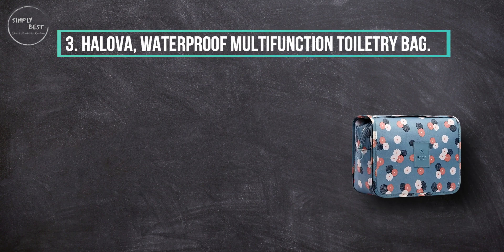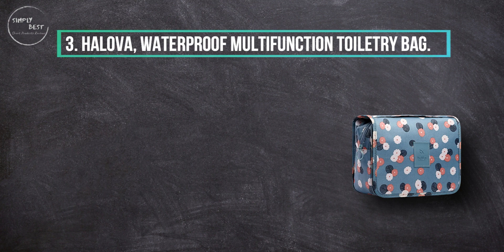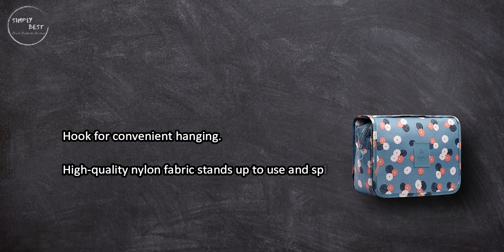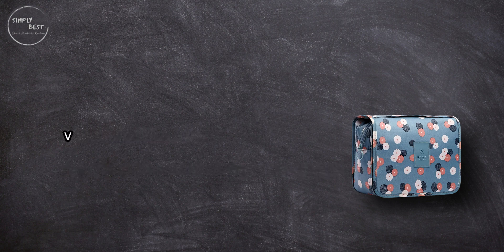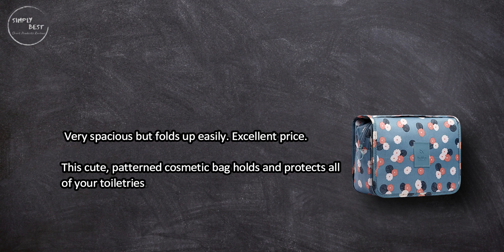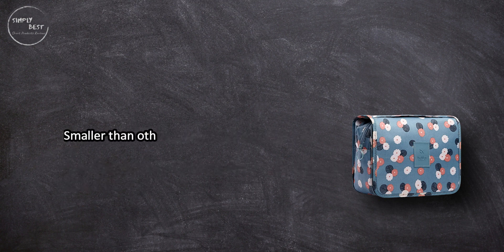At number three: Hail Over waterproof multi-function toiletry bag. Hook for convenient hanging, high-quality nylon fabric stands up to use and spills. Very spacious but folds up easily. Excellent price. This cute patterned cosmetic bag holds and protects all of your toiletries. Smaller than other cosmetic bags.